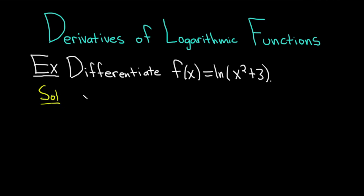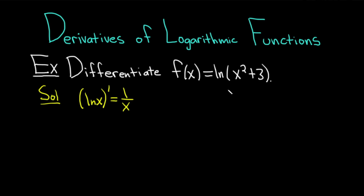Recall that whenever you have the derivative of the natural log of x, that's going to be equal to 1 over x. So in this particular problem, we have the natural log of x squared plus 3, so we have to use the chain rule.